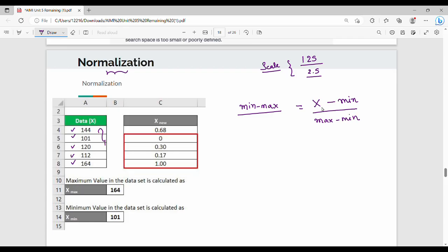What is the minimum value? Minimum value is 101. Maximum value is 164. What is the normalized value of 144? X value is 144, minimum value is 101, maximum value is 164. If you simplify it, it will be 0.68.